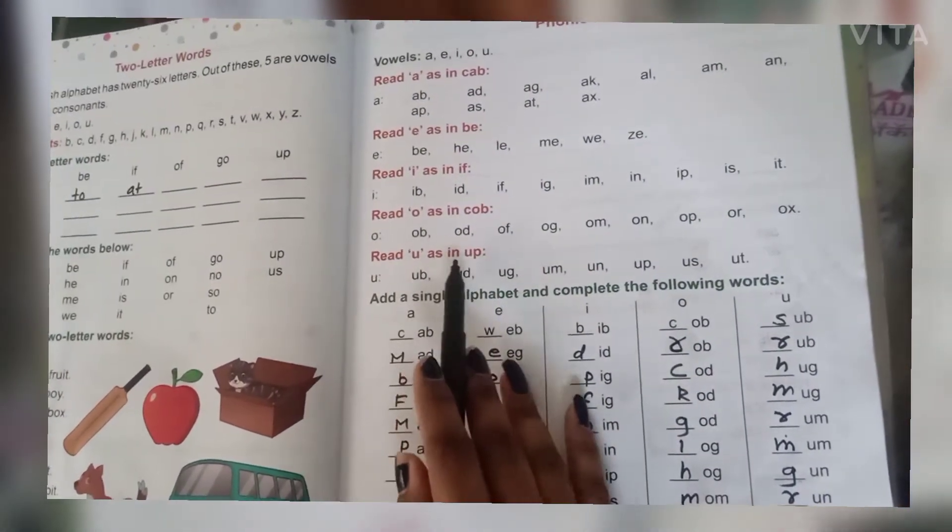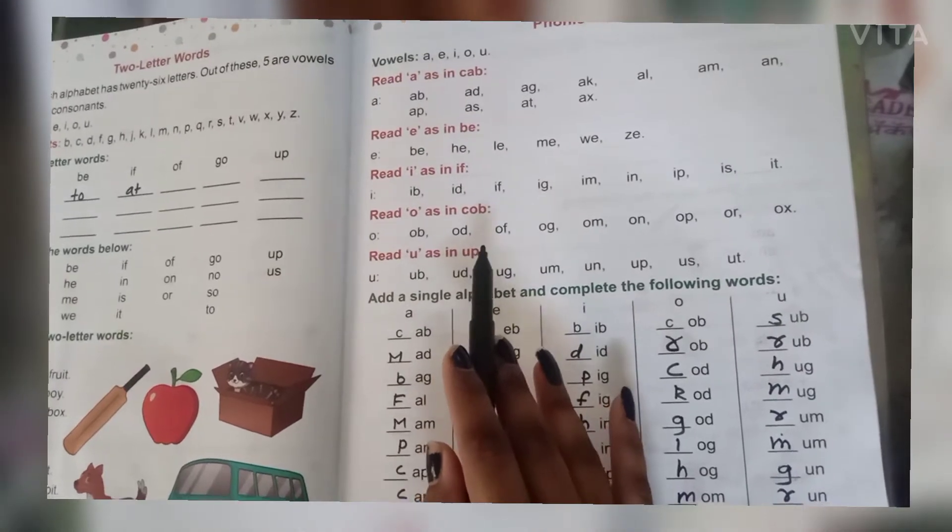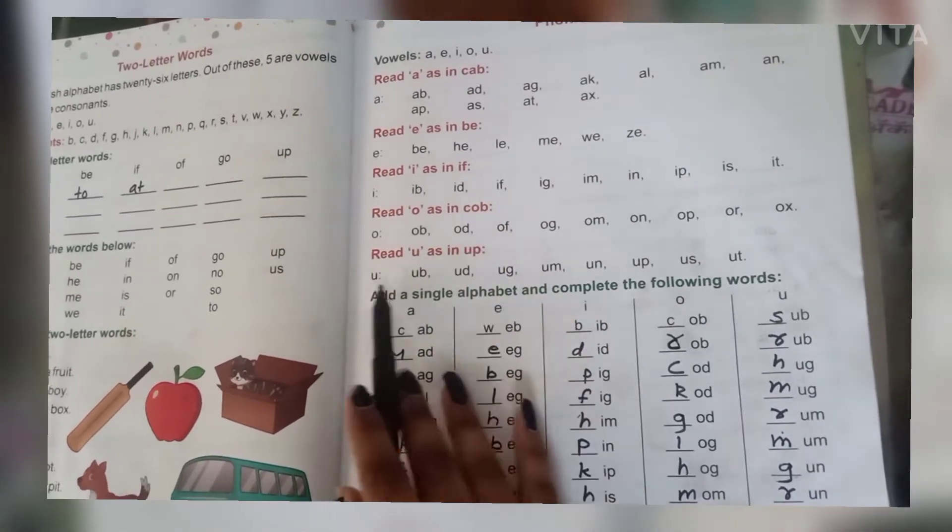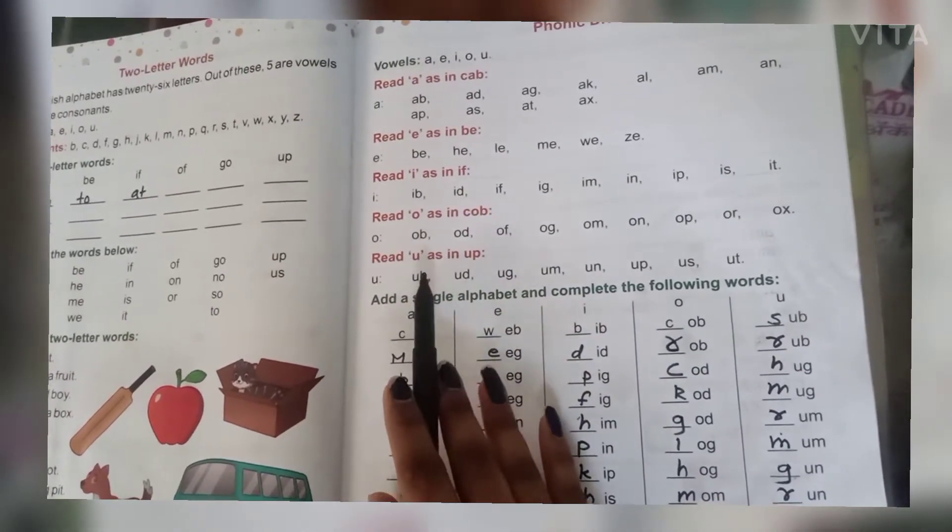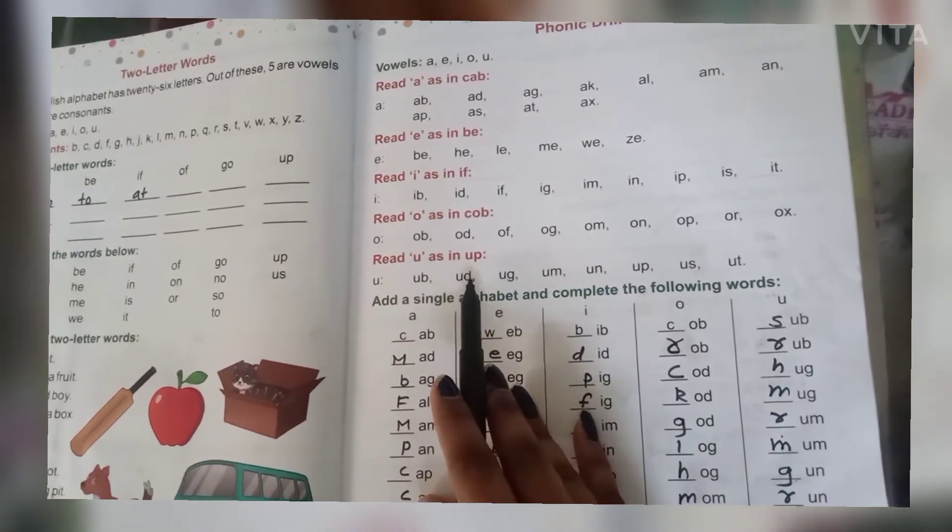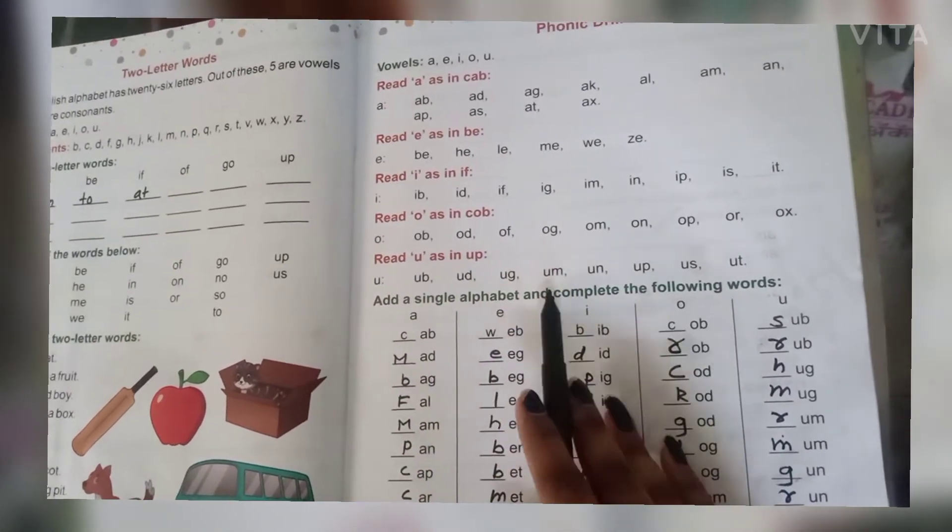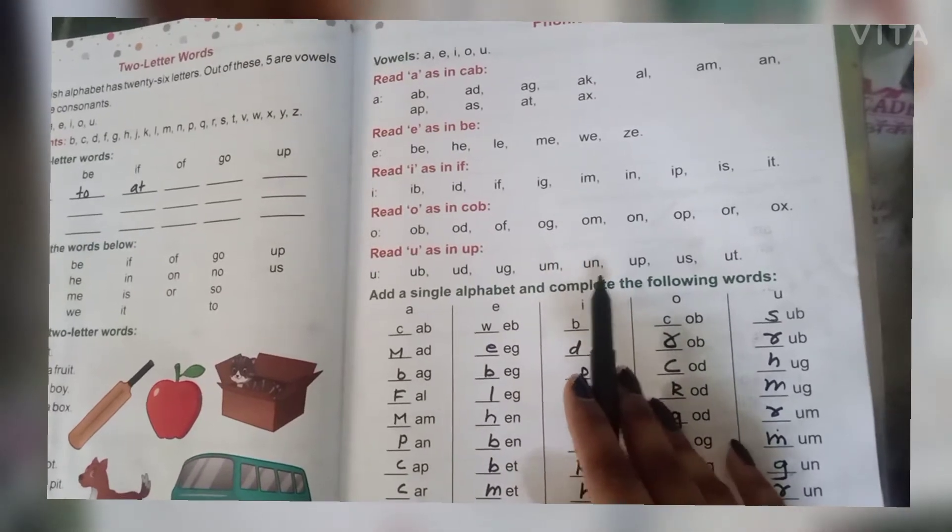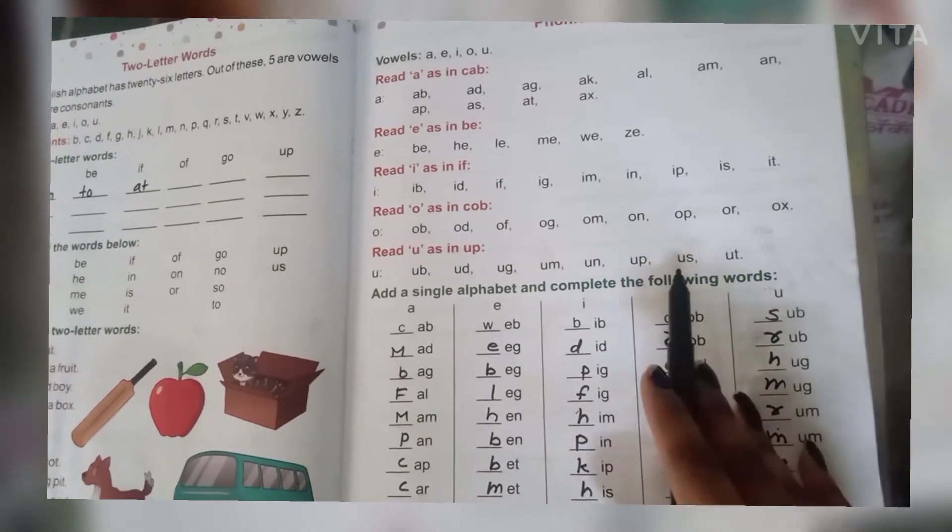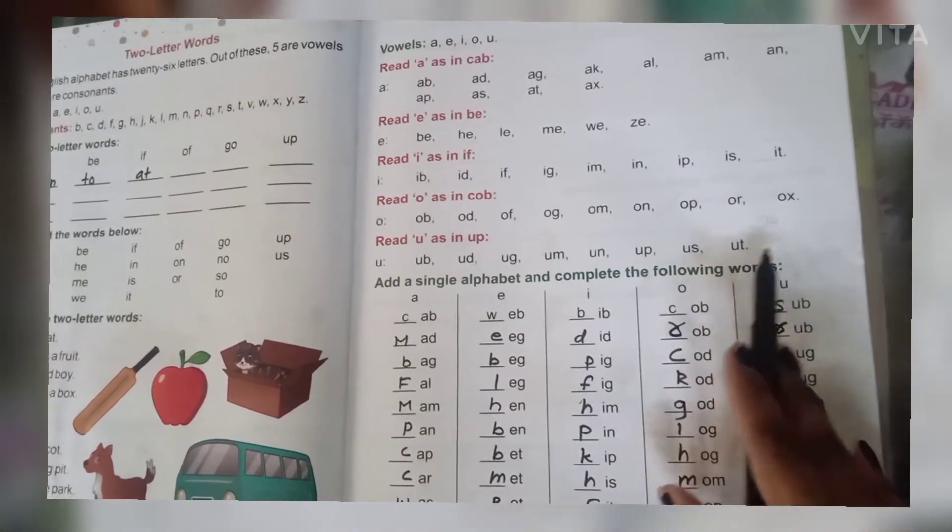Read U as in up. So you have to read it as up. U-B, ub. U-D, ud. U-G, ug. U-M, um. U-N, un. U-P, up. U-S, us. U-T, ut.